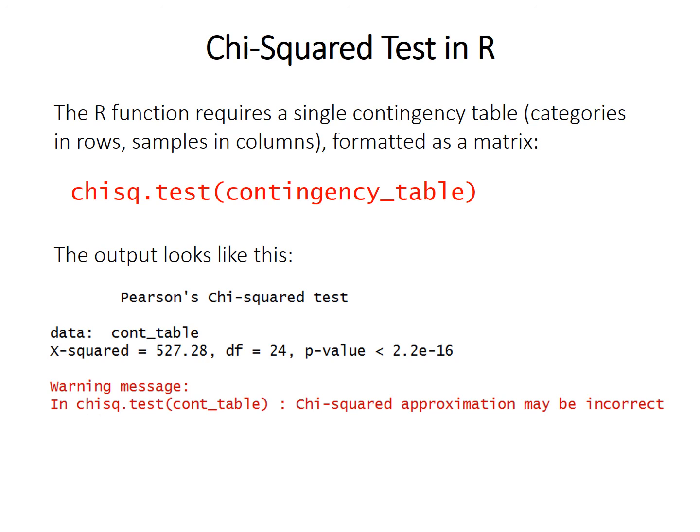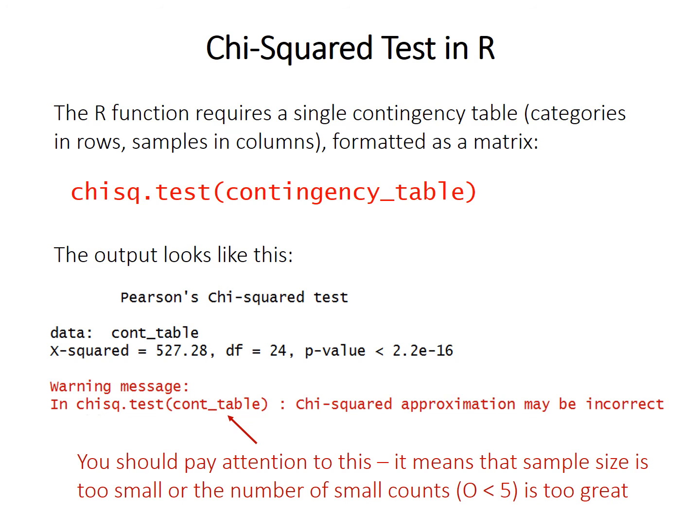I ran it on some unsuitable data where too many values were small and a number of observed counts were zero, and I got a warning message. You should pay attention to this warning, because it means the overall sample size is too small or the number of small counts is too great. You should reconsider whether the chi-squared test is the most appropriate choice, or whether you can combine some of your samples to give suitably large counts.